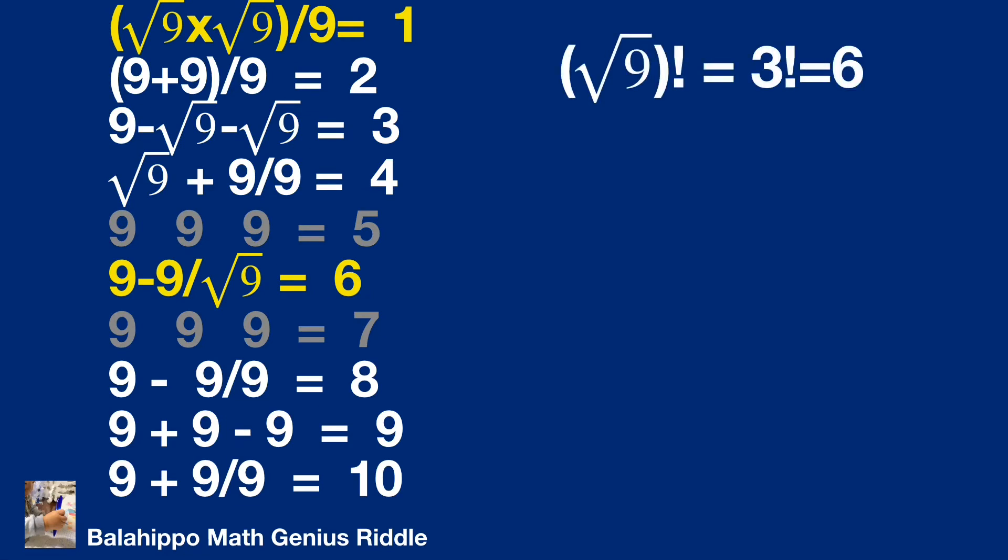Square root of 9 plus square root of 9... we find square root of 9 factorial equals 3 factorial equals 6. Square root of 9 factorial minus 9 over 9 equals 5. Again, it's another object.